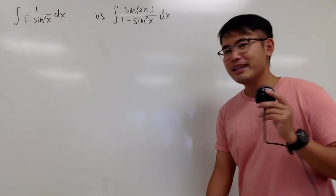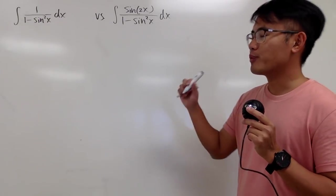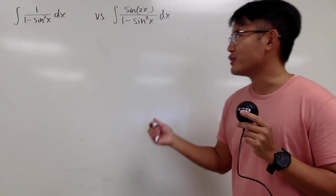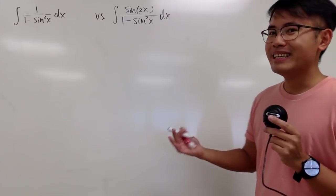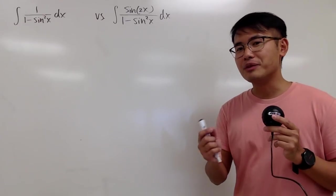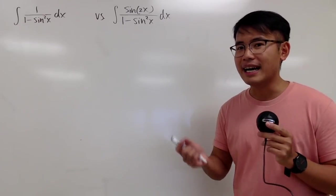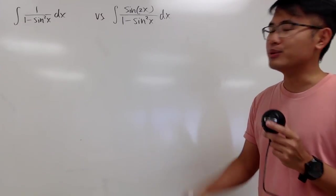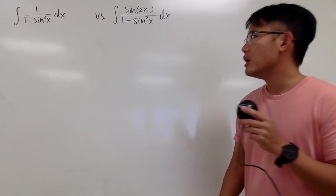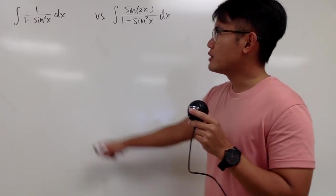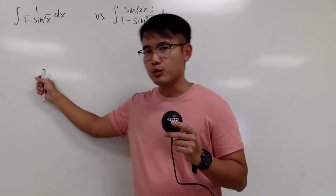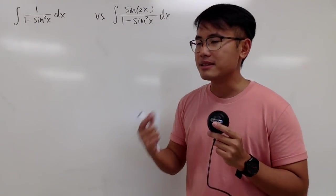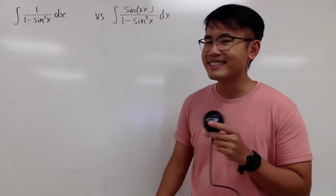In my opinion, they are both pretty tricky — tricky because we do have to use trig identities to help us out in these two questions. Let me just show you the first one right here because it requires fewer calculus steps.